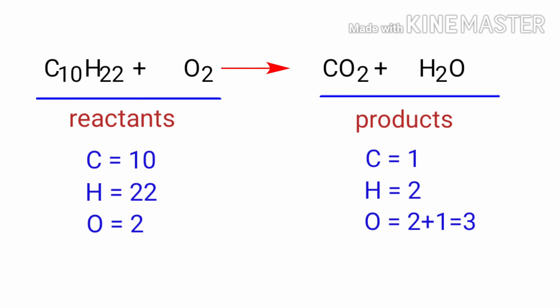In the reactants side, there are 10 Carbon atoms, 22 Hydrogen atoms and 2 Oxygen atoms present. The number of atoms are not balanced on both sides.